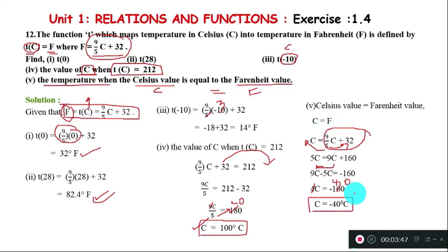So in degrees Celsius and Fahrenheit, when they are equal, the value is -40. That's the result.